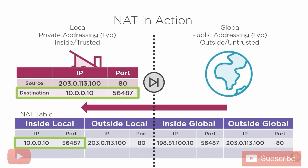Much like we keep the state of a TCP session in a TCP state table, with NAT we maintain a network address translation table that maps what the local packet looks like, maps what the global packet looks like, and allows us to translate between one and the other.